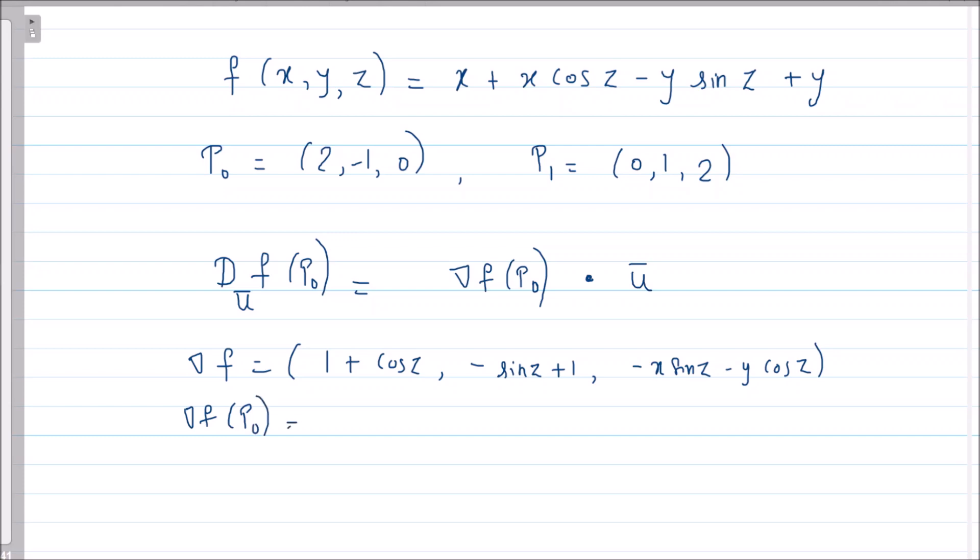Now what is grad f at P₀? Wherever you have x, y, z you replace it by (2, -1, 0). So cos 0 is 1, this is 2. Sin 0 is 0, so this is 1. Sin 0 is 0, cos 0 is 1, and y is -1, so this becomes 1. So this is my gradient vector. Now question is, what is the direction vector? I have to go from P₀ to P₁.